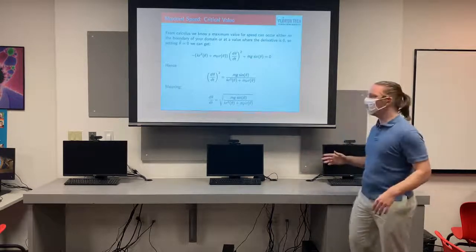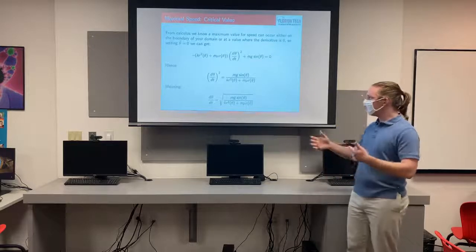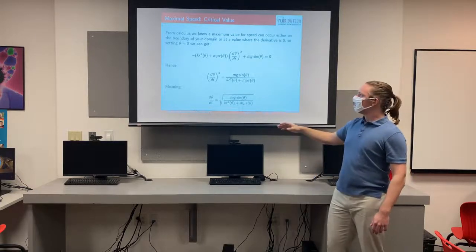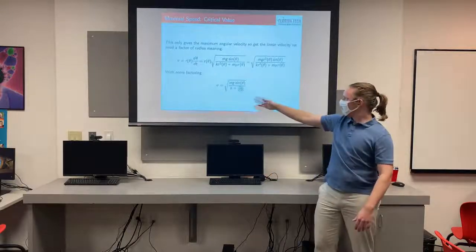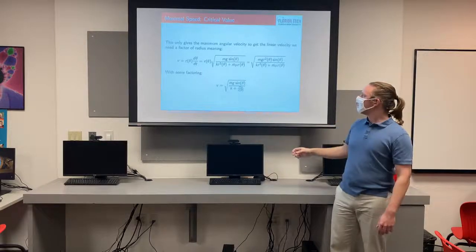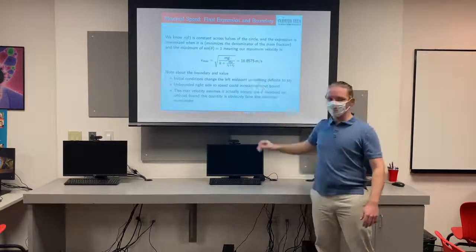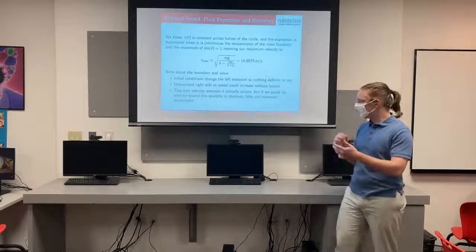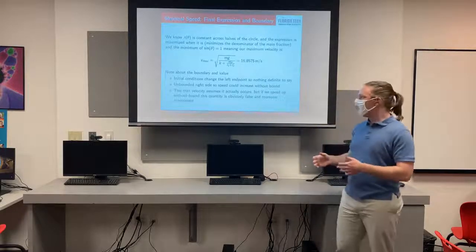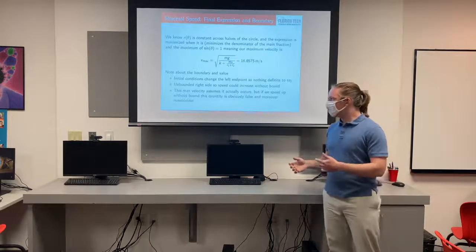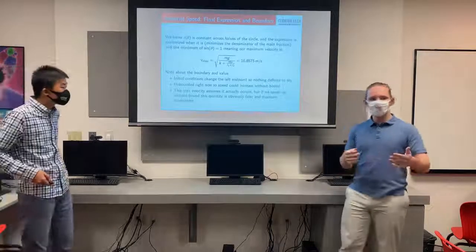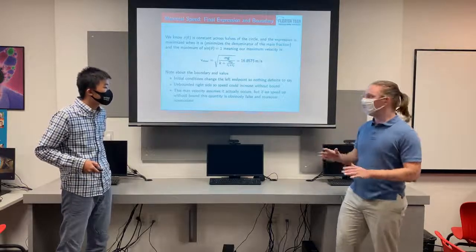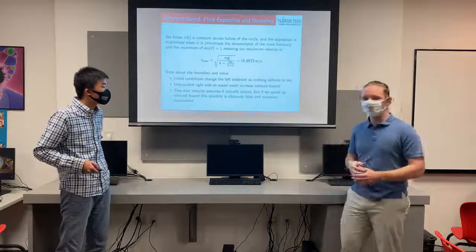To find the maximum speed, we assume it occurs where the second derivative is zero. Going through our angular velocity equation and solving for that, then converting to linear velocity by applying the radius factor, we obtain an expression for maximum linear velocity. With our initial conditions this turns out to be a high 16 meters per second, resulting from our high initial velocity and low dampening factors. With higher dampening we get a lower velocity, which makes sense; with no dampening, like the ideal case, we have an unbounded result. The right boundary is unbounded and the left boundary is governed by initial conditions. If the second derivative never reaches zero, as in the ideal case, there is no maximum.